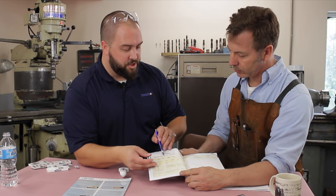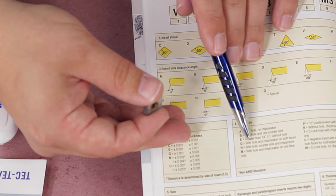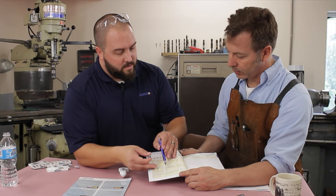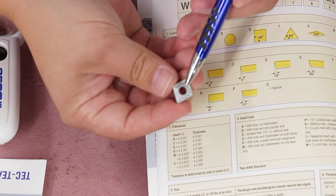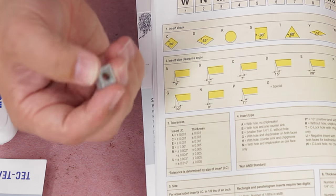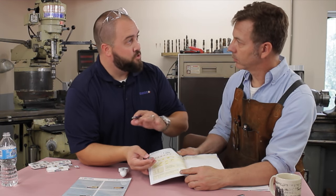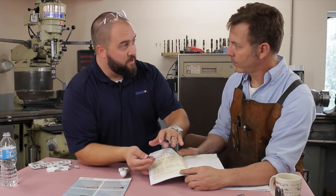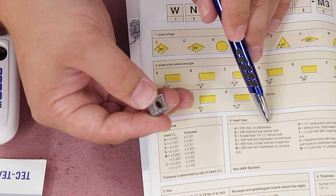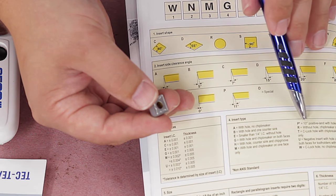Now if we look here, if it's an A, it'll have three degrees. If it's B, it'll be five. We're looking at an N here. N is zero. So there's no rake angle. When you look at it, it's a WN. So we know that it's the Trigon style insert and it has zero rake angle. Perfect.